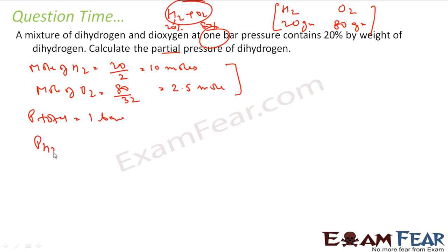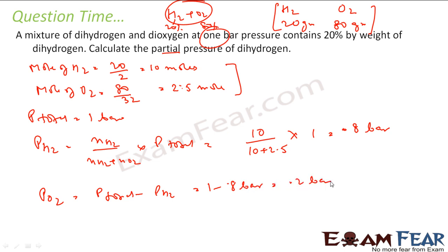So partial pressure of hydrogen will be moles of hydrogen by total moles times total pressure. Moles of hydrogen is 10, total mole is 10 plus 2.5, total pressure is 1. So if we solve this, this comes out to be 0.8 bar. Similarly, pressure of oxygen will be pressure total minus pressure of hydrogen. This will be 1 minus 0.8 bar, that is 0.2 bar.